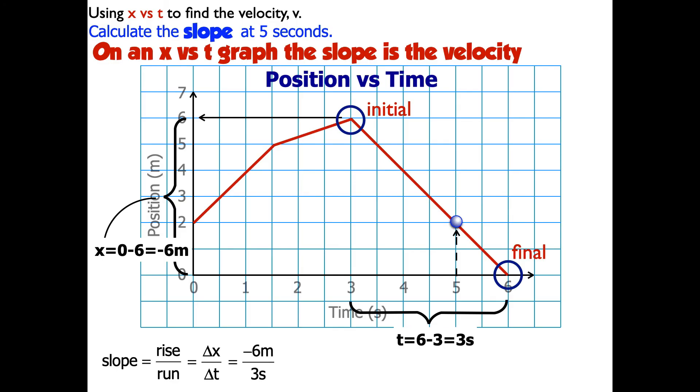So the slope is negative 6 meters over 3 seconds, which is negative 2. And the units are the units of the rise divided by units of the run. So it's going to be units of the rise are meters, units of the run are seconds. So it's negative 2 meters per second.